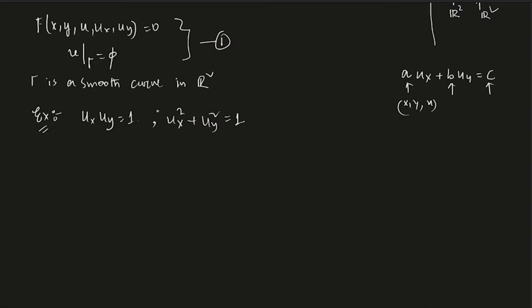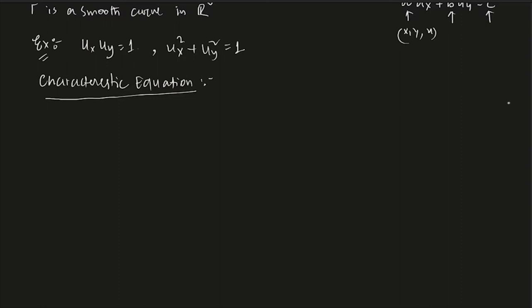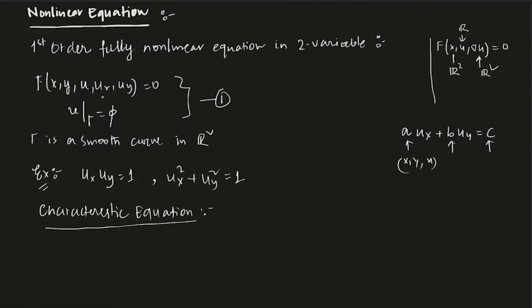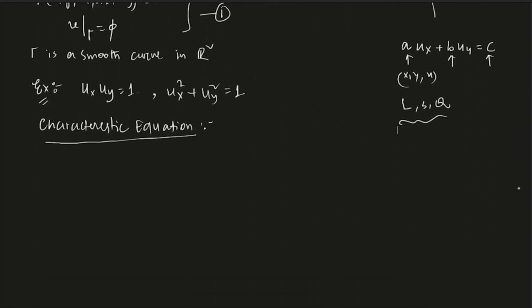We will use the same kind of thing, but we need an extra condition. Equations like ux·uy = 1, or ux² + uy² = 1, do not fall in the quasi-linear category, because a, b, c are functions of x, y, and u — not x, y, u, ux, and uy. So those are fully nonlinear equations. We want to see how to solve this kind of equation — we want to write some characteristic equations and find the solution.